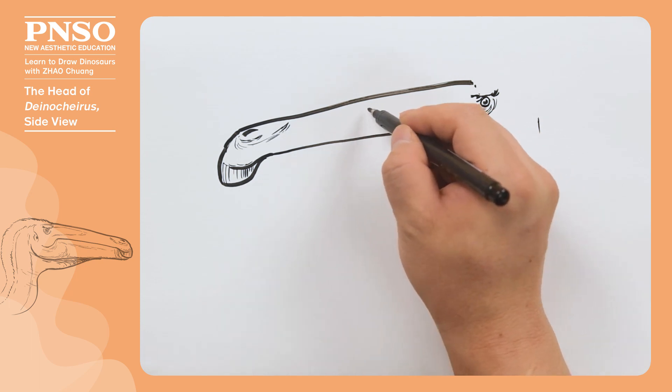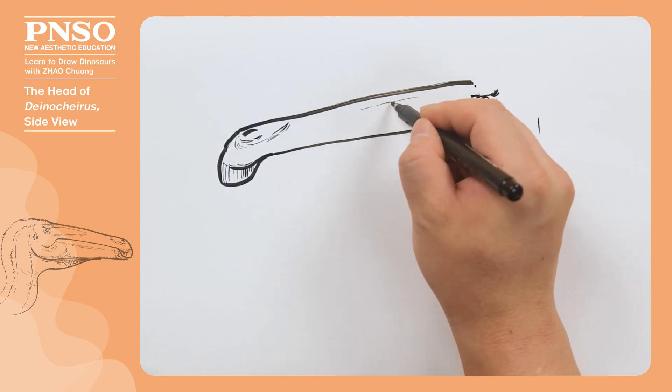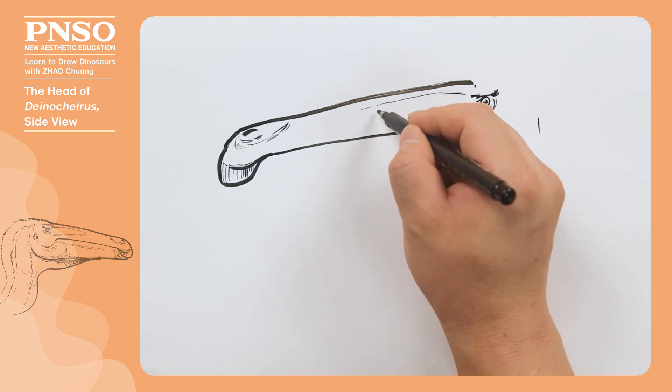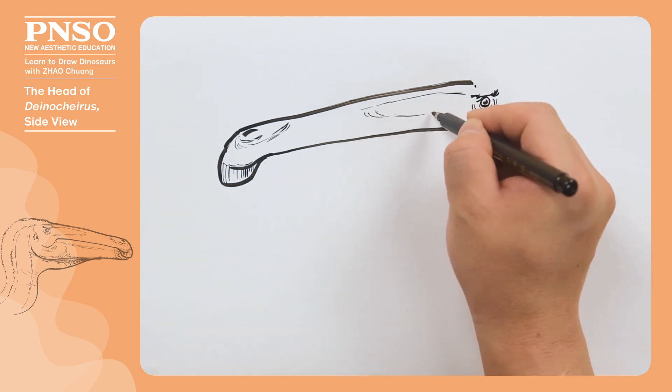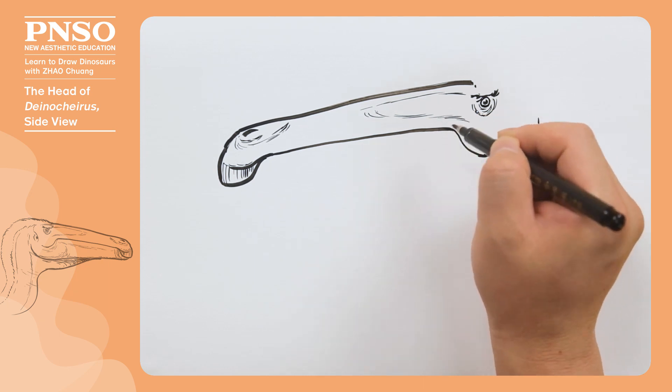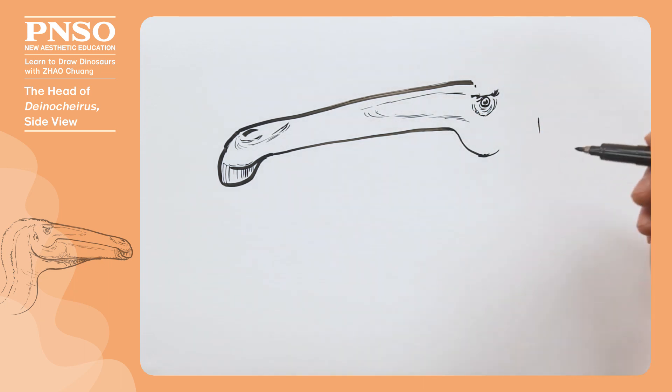Then, we draw the antorbital fenestra. Many dinosaurs had the antorbital fenestra, and Deinocheirus had them relatively backward and slightly smaller, probably here. We also draw it with dotted lines.